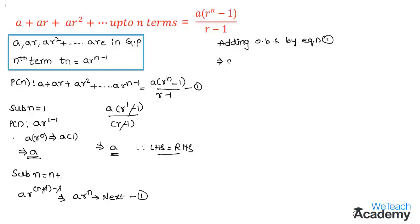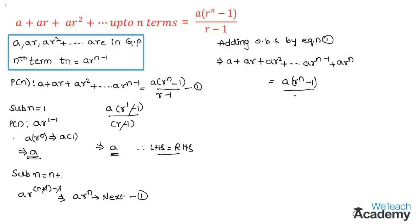So we get a plus ar plus ar squared, and so on, plus ar to the power n minus one, plus ar to the power n, equal to a into r to the power n minus one divided by r minus one, plus ar to the power n.